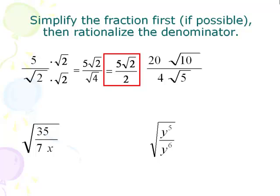On the next one, we have 20 over 4, which are both outside of the square roots — you can reduce those to 5. And inside the square roots, 10 over 5 reduces to 2. So 2 square root of 2 is our answer. We don't actually have to do any multiplying in this one; you just have to reduce your fractions.